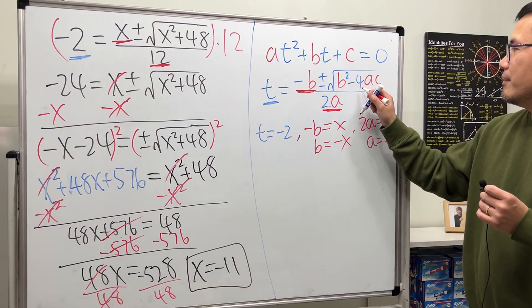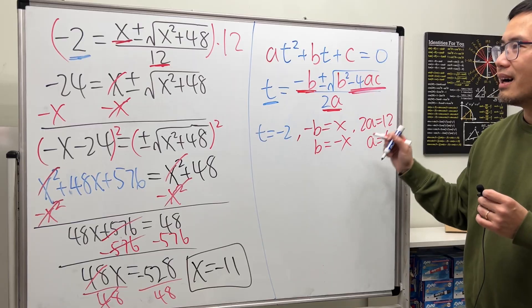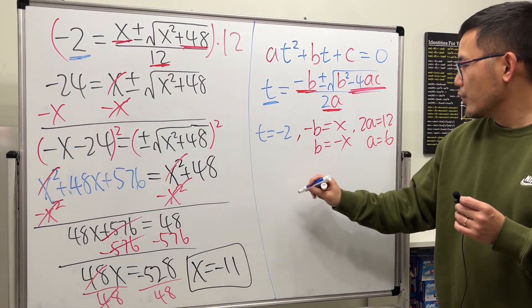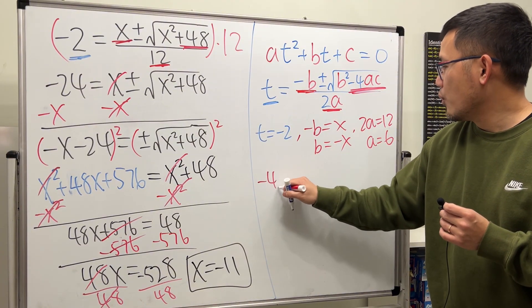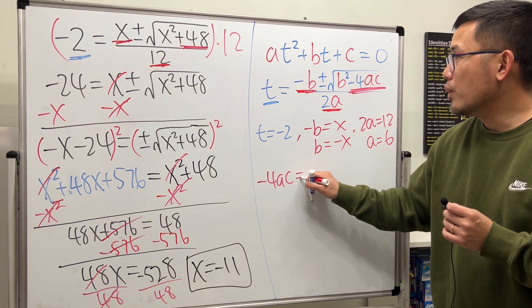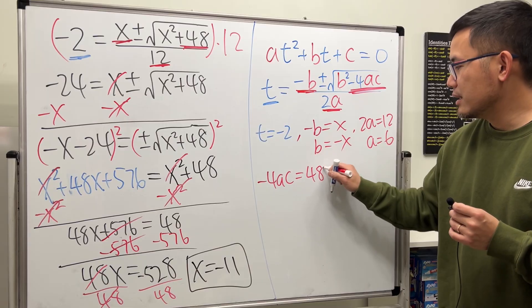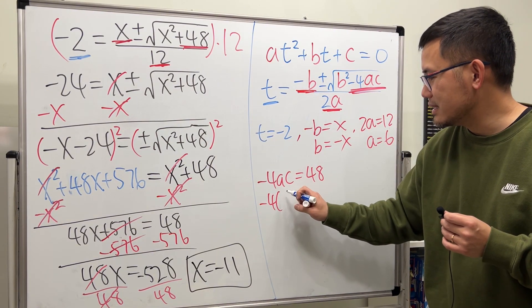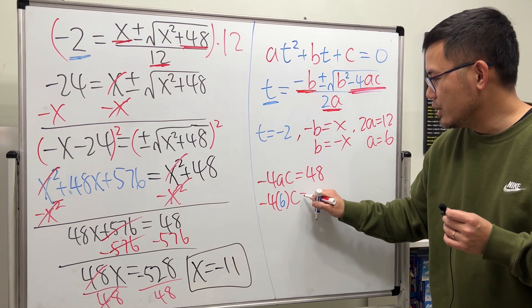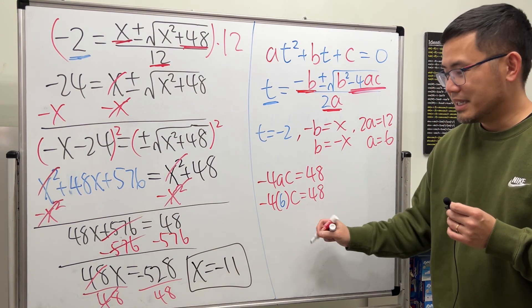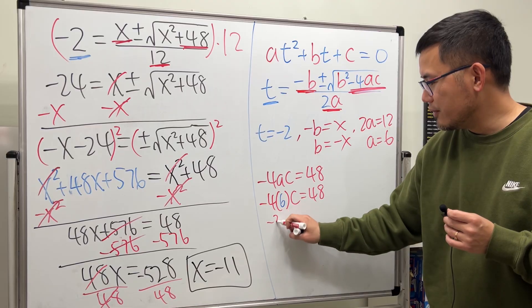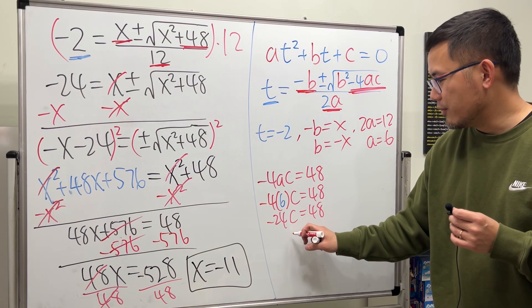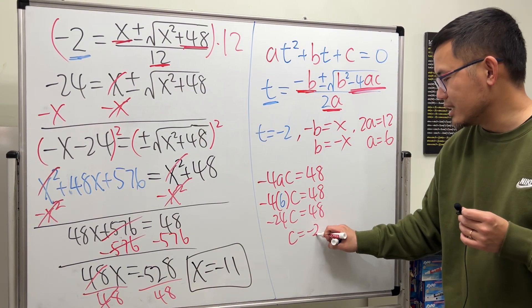Lastly though, let's use this part. That has to match with positive 48. So, we have negative 4ac equals positive 48. But remember, a is equal to 6. So, this is negative 4 times 6 times c equals 48. This right here is negative 24c equals 48. Divide both sides by negative 24, we get c equals negative 2.